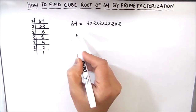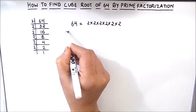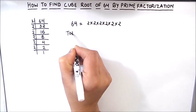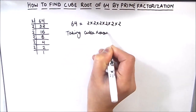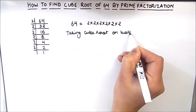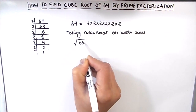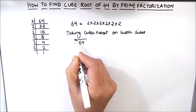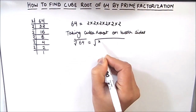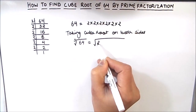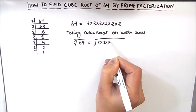We take the cube root on both sides. On the left-hand side we have the cube root of 64, and on the right-hand side we have the cube root of all these prime factors: cube root of 2 × 2 × 2 × 2 × 2 × 2.